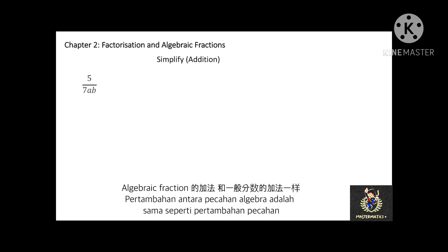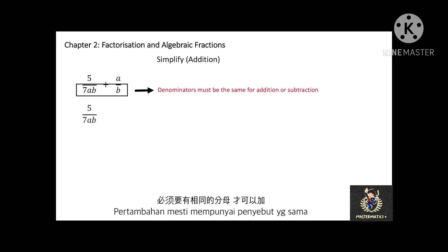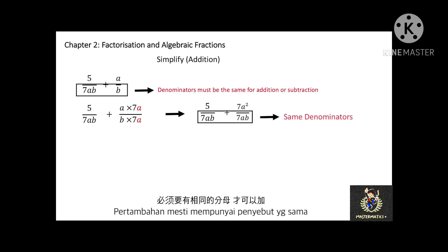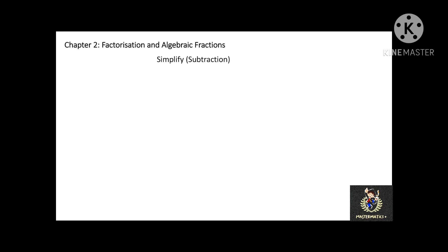The addition of algebraic fractions is similar to the addition of regular fractions. For the addition between algebraic fractions, both fractions must have the same denominator. For example, 5 over 7ab plus a over b — the fraction a over b will be multiplied by 7a so that both denominators are the same before adding. This is also similar to subtraction between algebraic fractions, where both must have the same denominator.